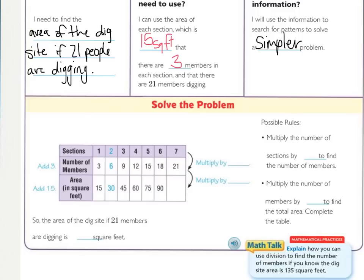The area is 15 — each area is 15, so it's add 15. Now we need to look at some possible rules. Multiply the number of sections by something to get the number of members. So, what would you multiply the number of sections by to get the number of members? One times something gives me three, so that's times three. Two times three gives me six — you're going to multiply by three. But that doesn't get us the area answer, so there's one more step: we need to find a rule from the number of members to the size of the area.